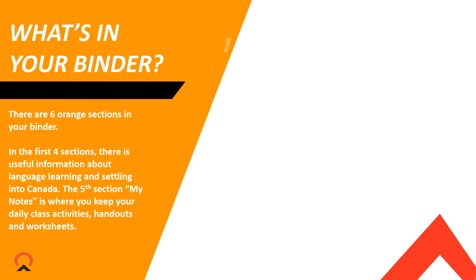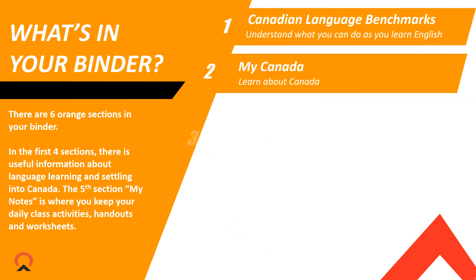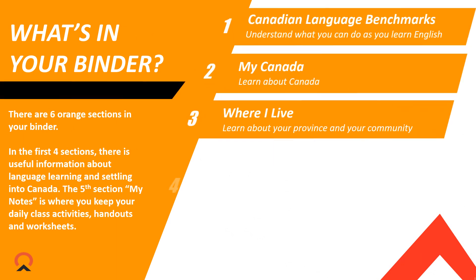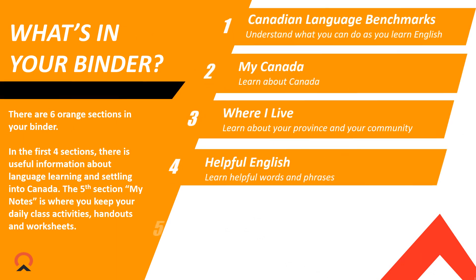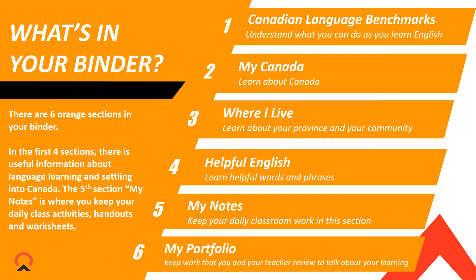So, what's in your binder? There are six orange sections in your binder. In the first four sections, there is useful information about language learning and settling in Canada.